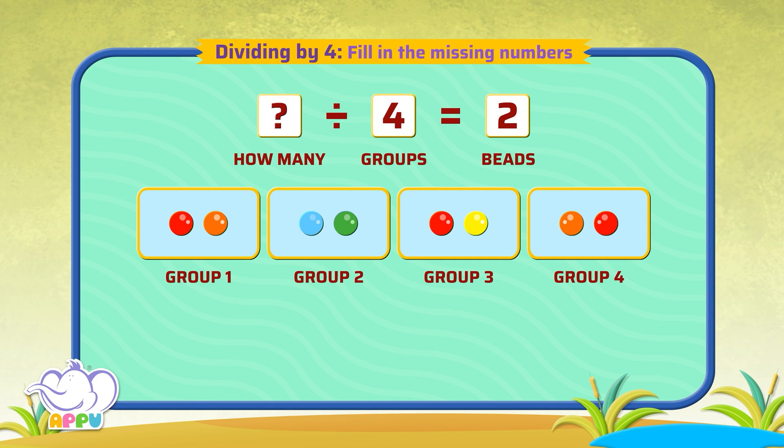We use multiplication that we learned earlier. 2 times 4 equals 8. So the answer is 8.